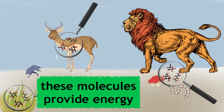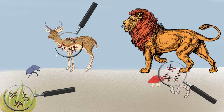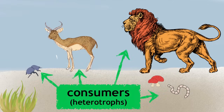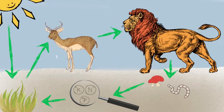These molecules provide energy for all living organisms in an ecosystem. All other organisms that do not photosynthesise are considered consumers or heterotrophs. Many molecules, along with energy, are cycled in an ecosystem as organisms transfer them from one individual to another.